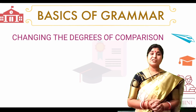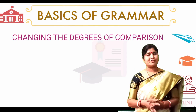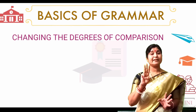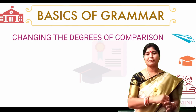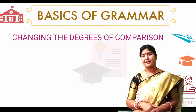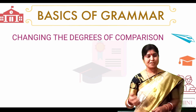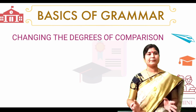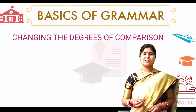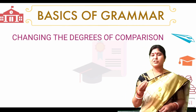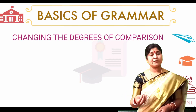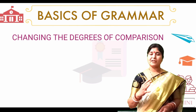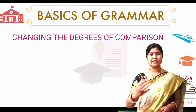Next, we look at changing the degrees of comparison. As we know, there are three types of degrees of comparison: positive degree, comparative degree, and superlative degree. One sentence can be changed into positive, comparative, and superlative degree.